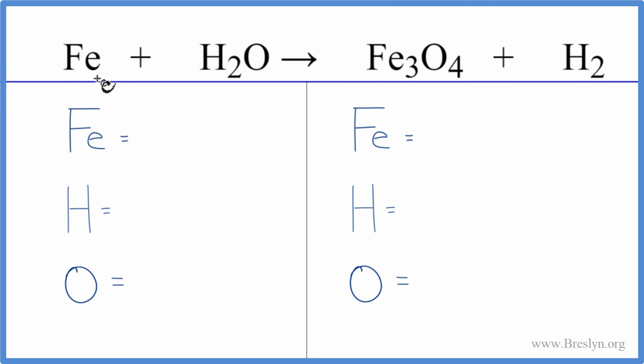In this equation, we have Fe, that's iron, plus water. And the water, it needs to be in the form of steam. It has to be hot for this reaction to take place and to give us these products.